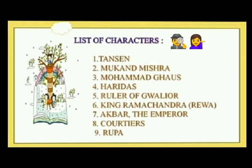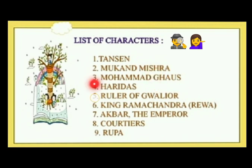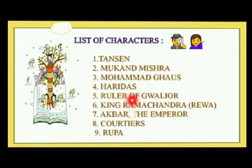The first character is Tansen, the main character of the story. He was a well-known figure in Indian classical music. Number two: Mukand Mishra, who was Tansen's father. Number three: Muhammad Gos, who was a famous saint and musician. Number four: Haridas, who was Tansen's teacher.